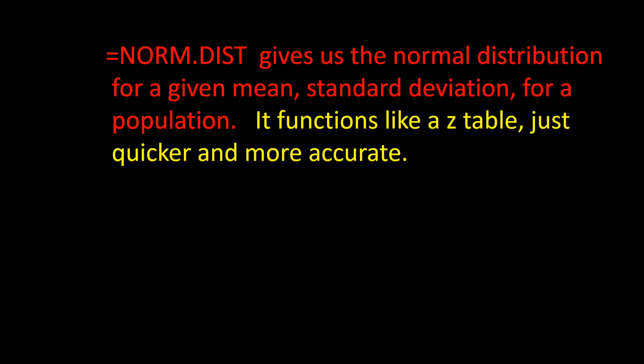So in a nutshell, the function NORM.DIST gives us the normal distribution for a given μ mean and a given σ standard deviation for a population. It functions very much like a z-table.